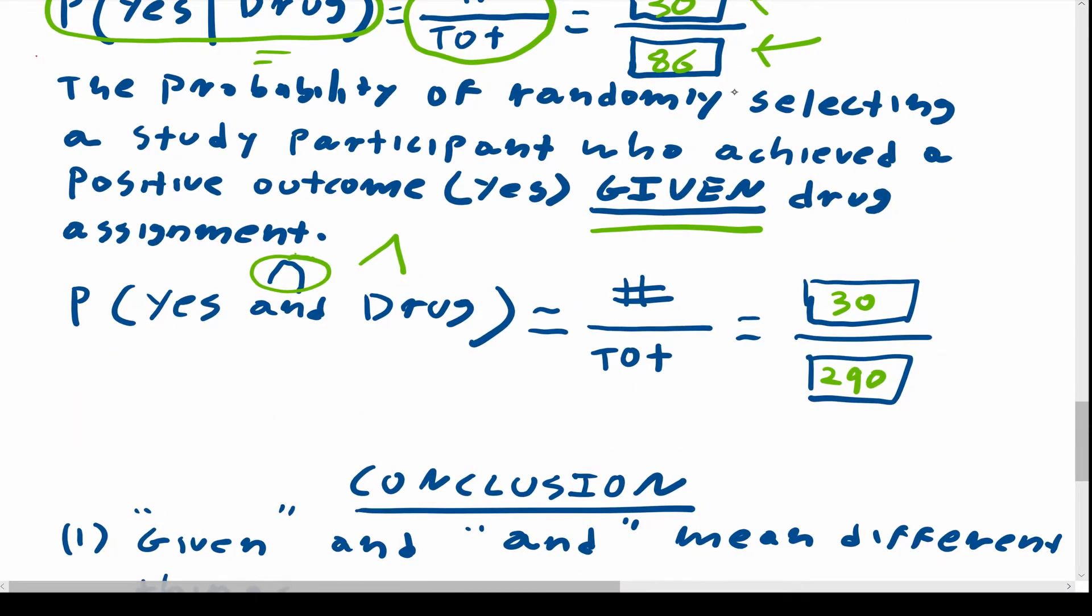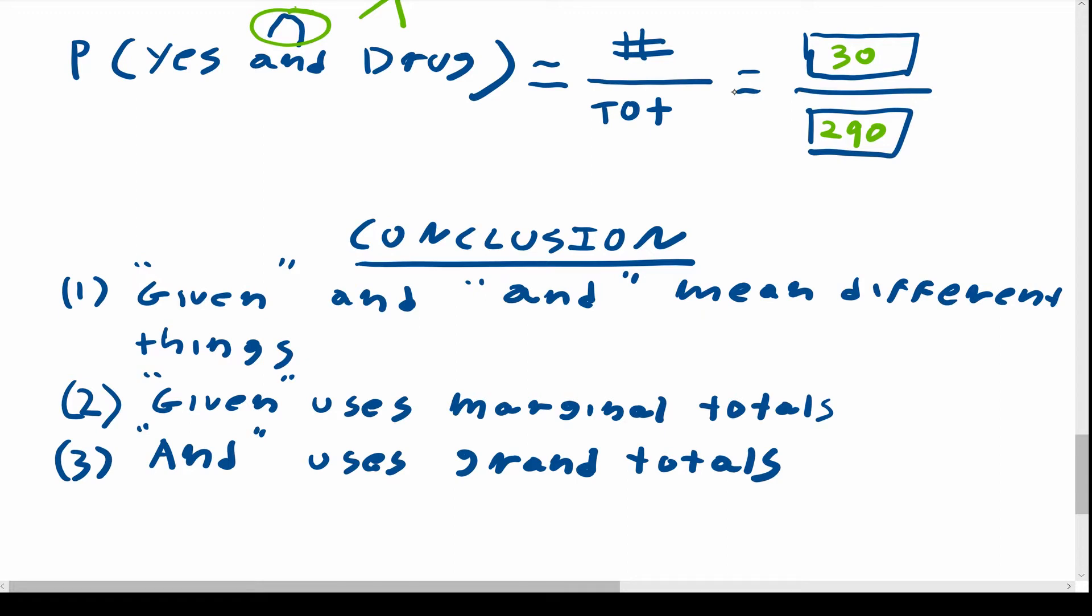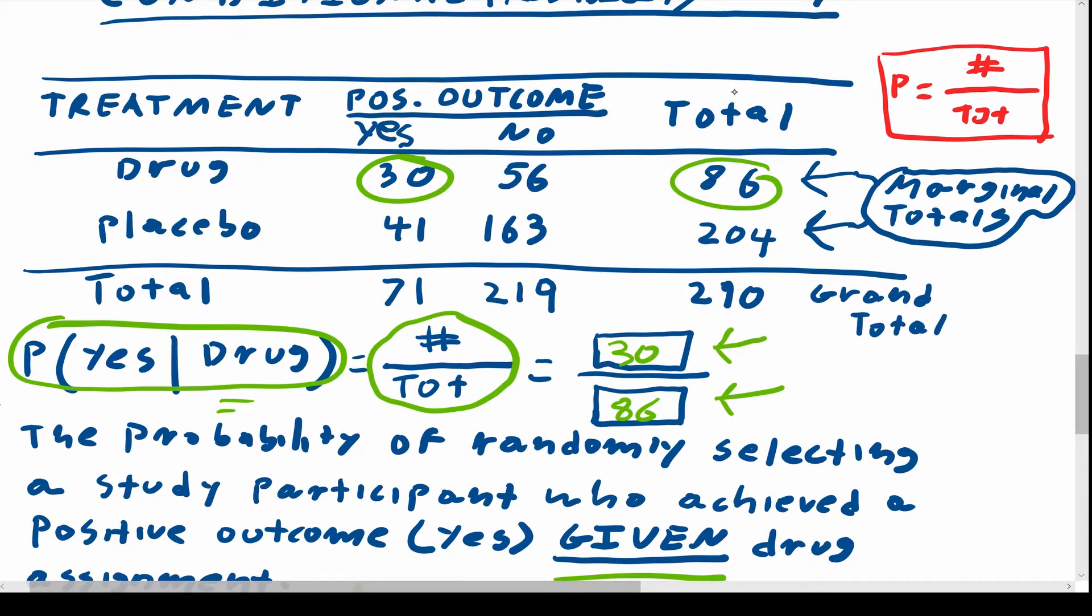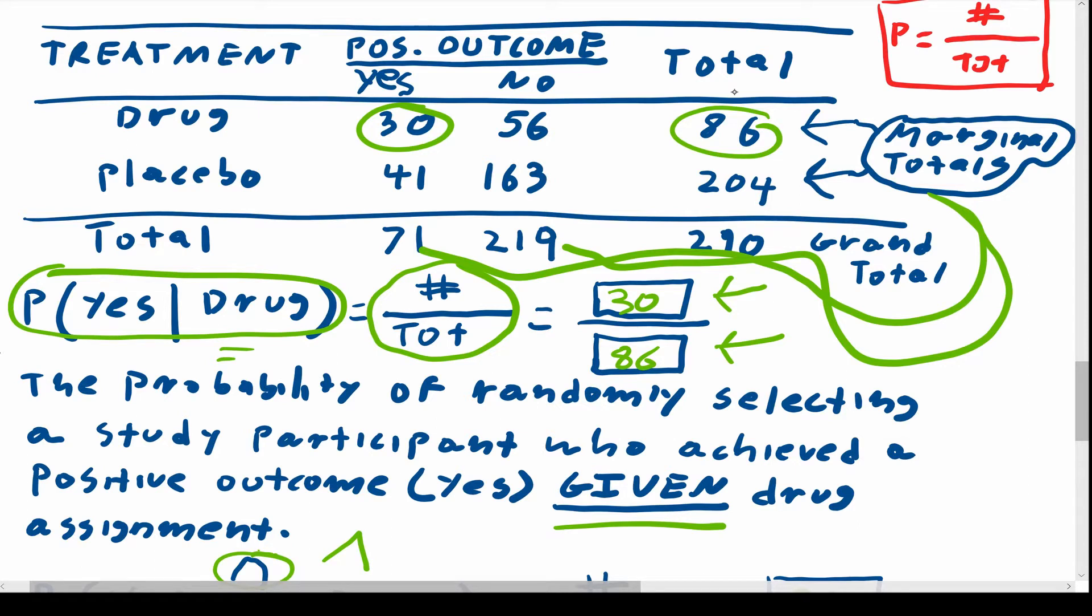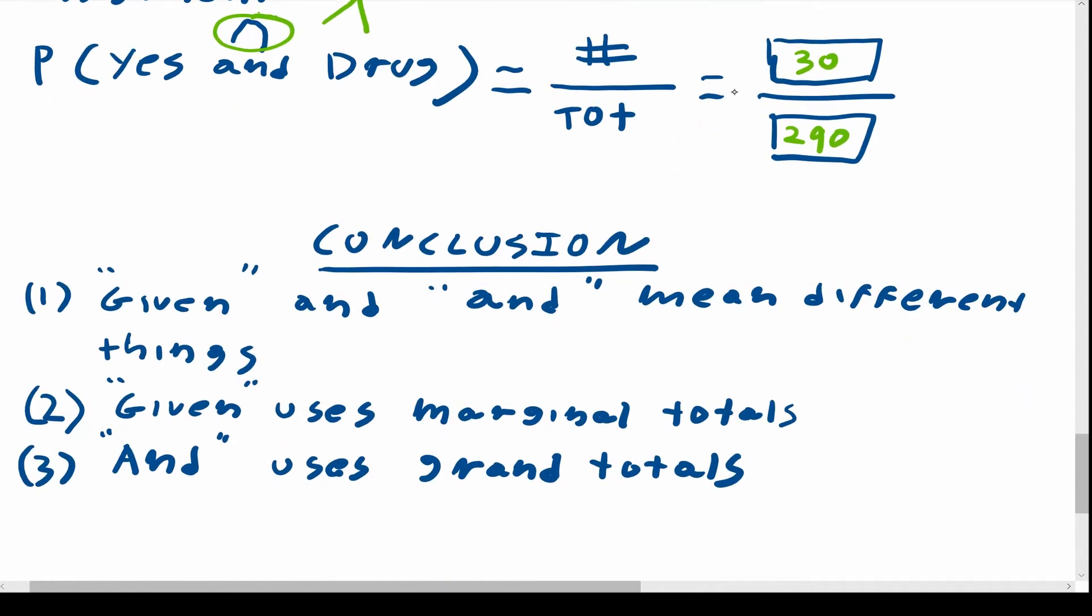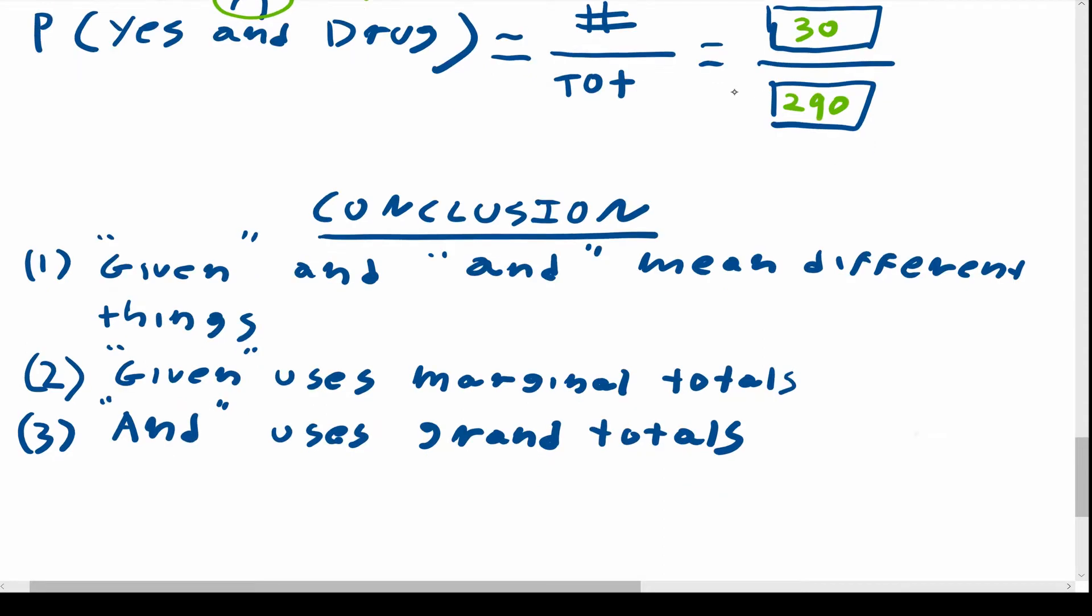So I want you to notice that the word given and the word and mean different things. Given uses marginal totals for the denominators. And and uses the grand total. So if you go back to this table, these row totals over here are called marginal totals. The column totals also are called marginal totals. You wouldn't use them in a randomized clinical trial, but you could on a test asking very specific questions. So in any case, there is a difference between the word given and the word and. And remember, given uses the marginal totals and and uses the grand totals.